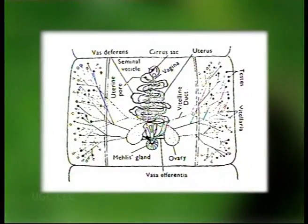The mature proglottids contain a large number of testes in the anterior region towards the lateral sides, and then we have the vitellaria, the ovaries, the vas deferentia connected to the testes. These vas deferentia are connected to the vas deferens, and this vas deferens is connected to the cirrus. The female reproductive organs comprise the two ovaries, then the vitelline glands, and there is an ootype, then the uterus. This uterus is firstly tubular and then develops into a large uterus comprising many hundreds of eggs. It has been seen that a single worm can lay up to one million eggs per day.